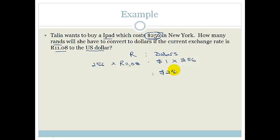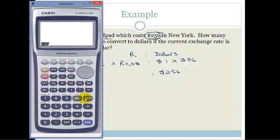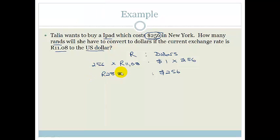Therefore, $256 is equal to, and again we need to get our calculator out, and we've got 256 times 11.08. And we've got 2,836 Rands and 48 cents.